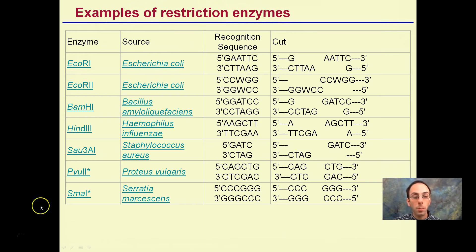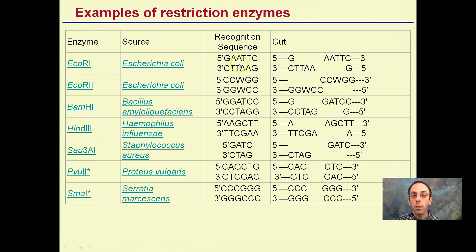Examples of restriction enzymes — you don't have to memorize these. These are some commonly used ones and where they come from. ECO-R1 and HINDI-3 are very common and have been used in the lab. Each has a specific sequence it looks for. Remember our 5' and 3' regions from when we talked about DNA — these orient you in the DNA, and each enzyme has a specific recognition sequence that determines exactly where it will cut.